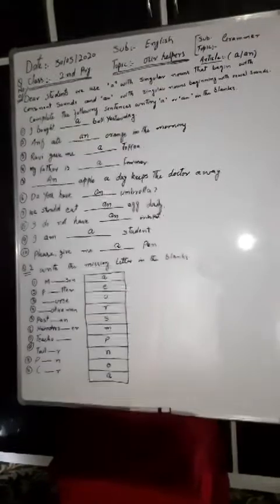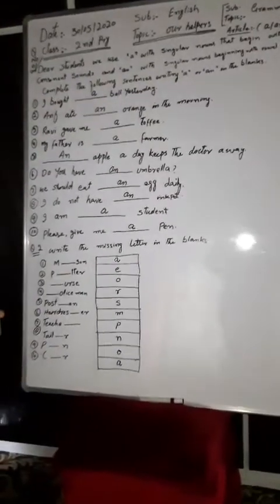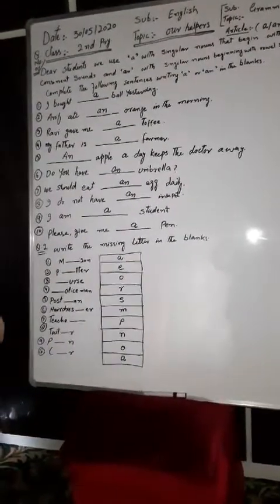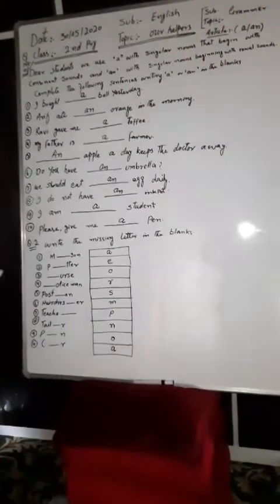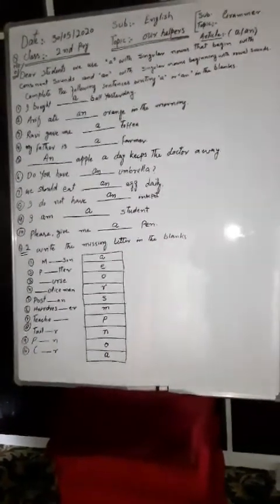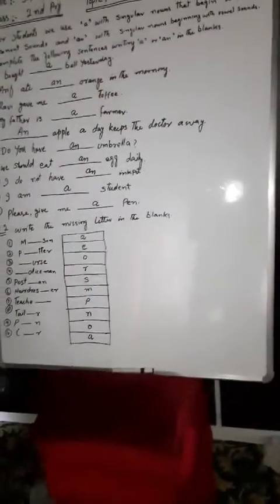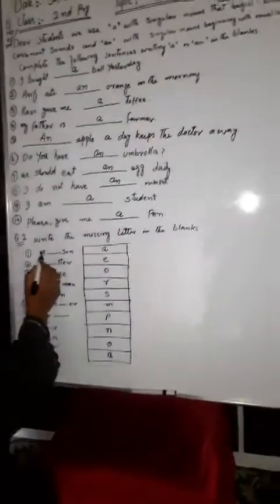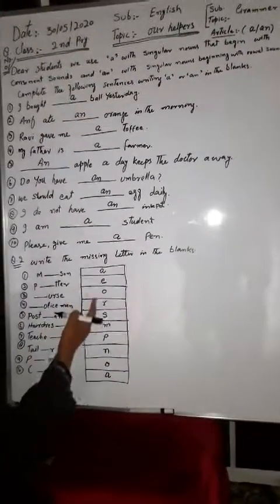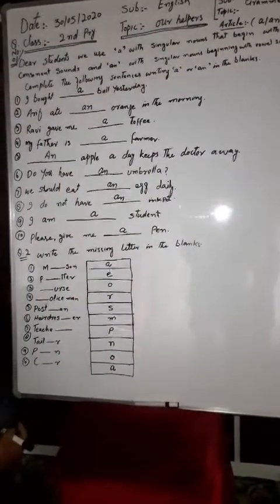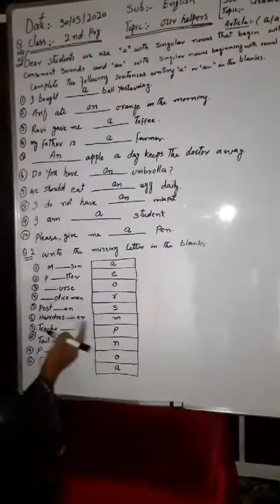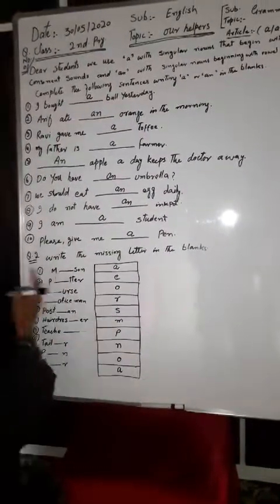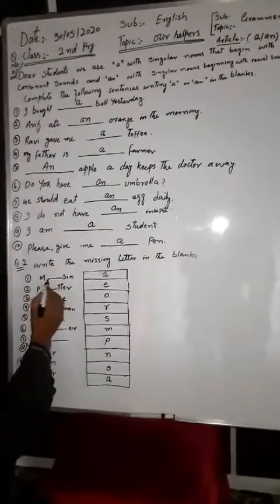Question number 2: Write the missing letter in the blanks. For example, if you write in the blanks, the word is blank. You will write M, A, S, O, N. You are going to get letters like A, E, O, R, S, M, P, N, O, A - different letters. You need to look at the pictures.